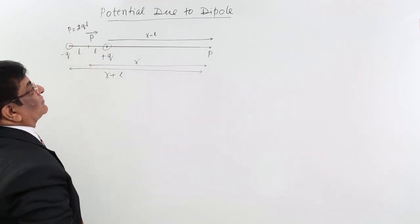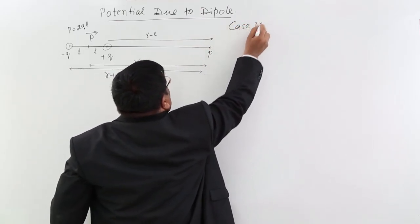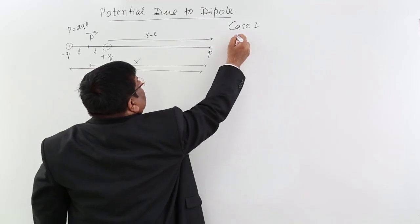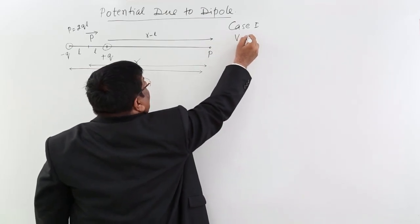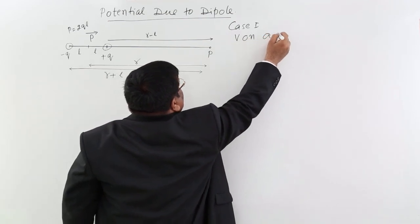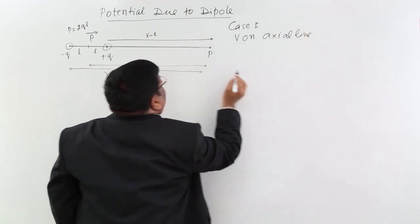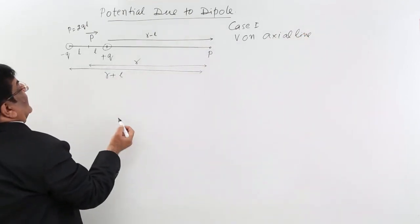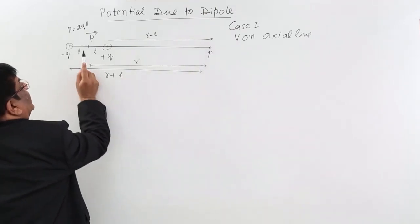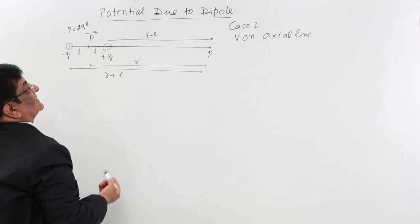Case 1 refers to the axial case. There is a point on the axis of the dipole, so we are studying V on the axial line. Let this point P be at a distance R, measured from the centre of the dipole.